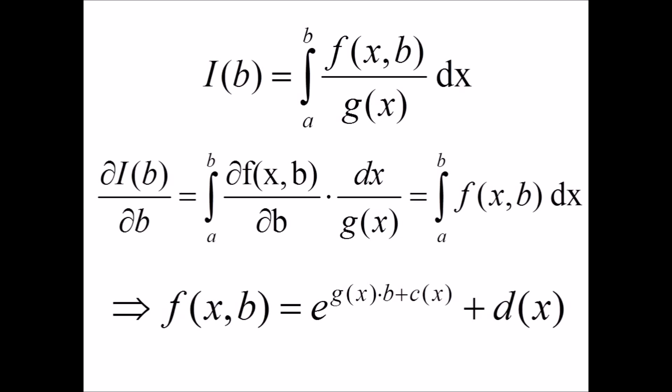If we follow out this ansatz and solve a partial differential equation, we'll obtain that f of x of b is equal to e to the power of g of x times b plus c of x plus a term d of x.